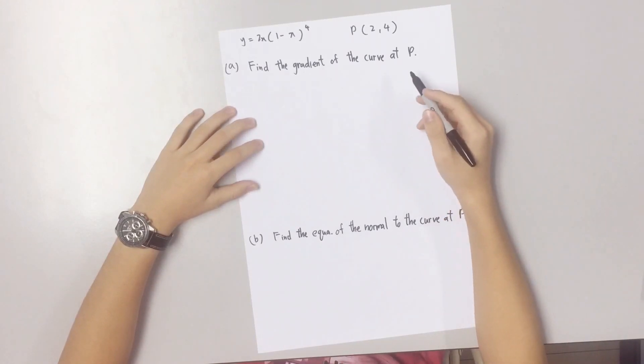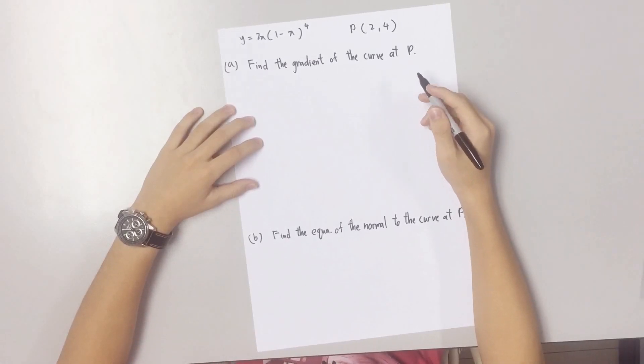Find the gradient of the curve at P. First, we differentiate the equation by using product rules to get the gradient function.